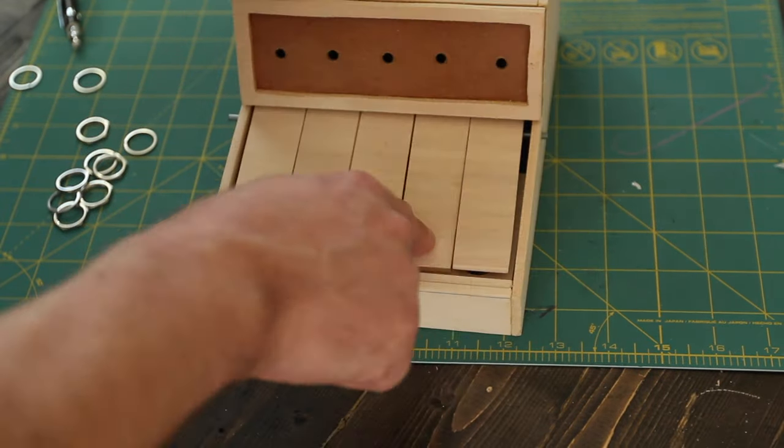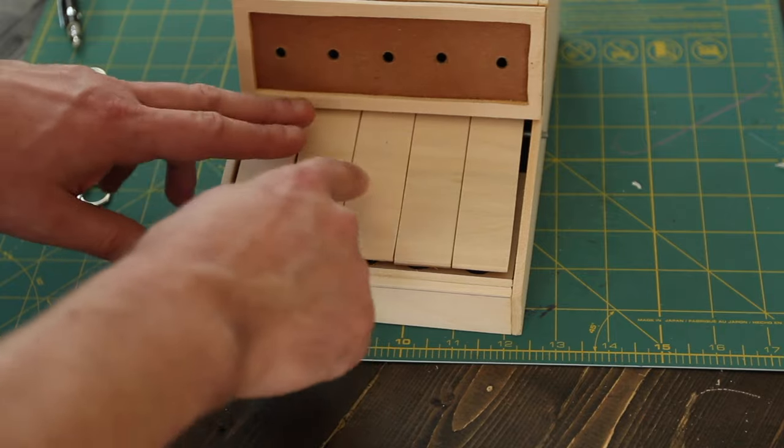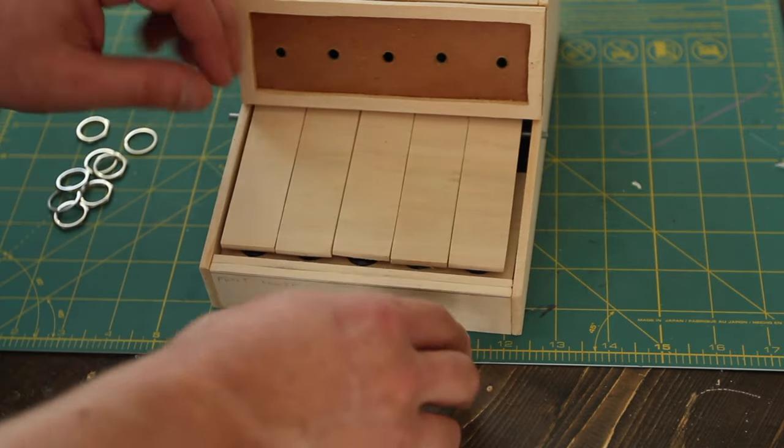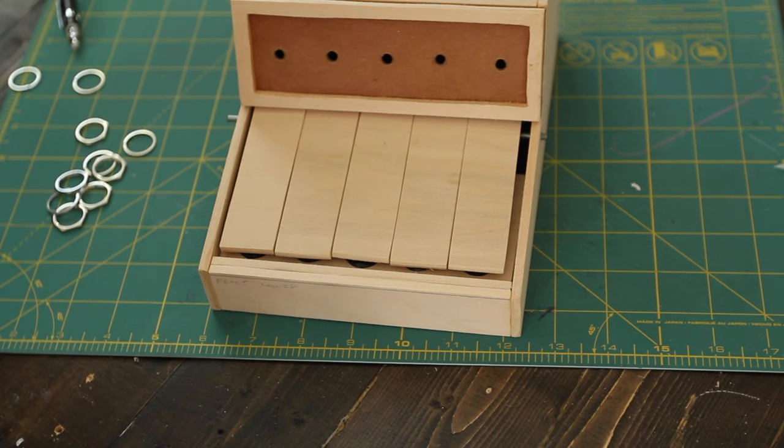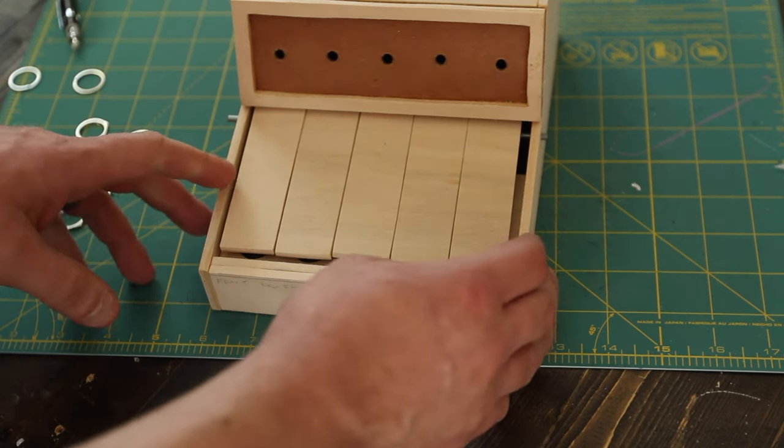When I saw how my keys were positioned in the case here, I decided to tweak their position a little bit. Luckily, hot glue will release from the plastic tubing with just a little bit of force.